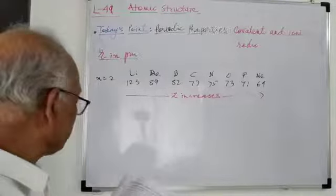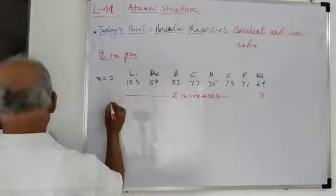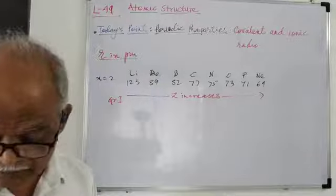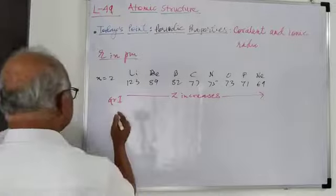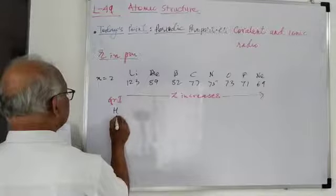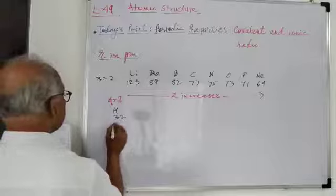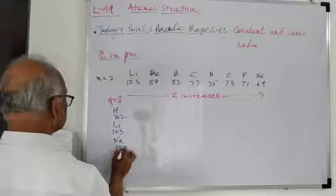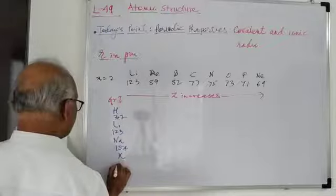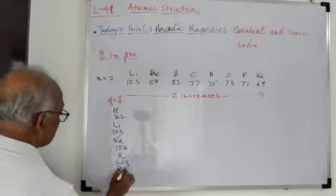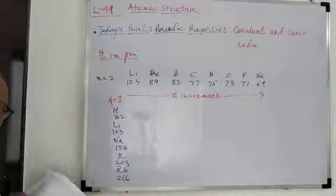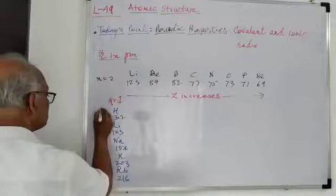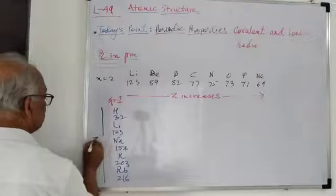This trend is observed in every period. Now if we consider any group, for example Group 1, you will find the elements as follows: hydrogen with size 32 pm, lithium with 123, sodium with 154, potassium with 203, rubidium with 216, and cesium with 235. As we move down the group, Z — that is, nuclear charge — increases.